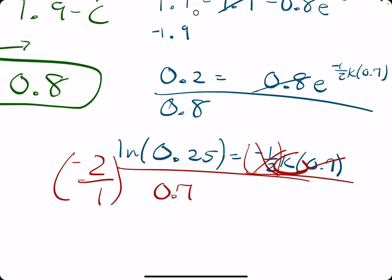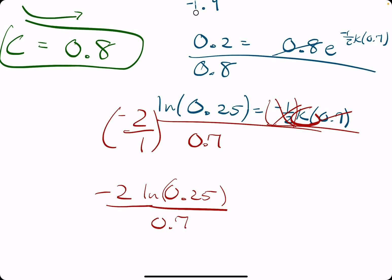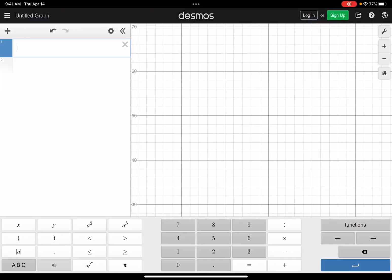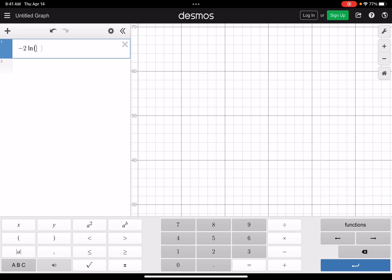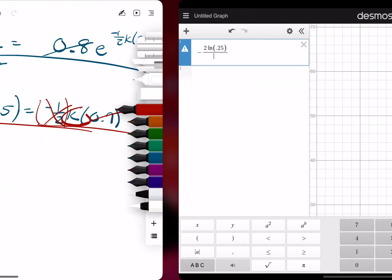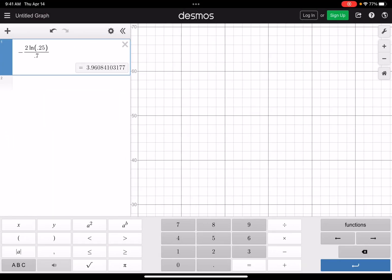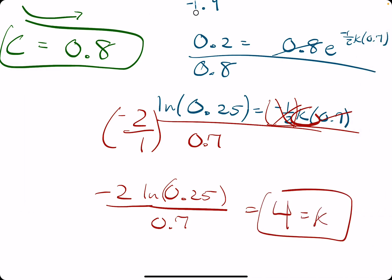So, we will get k by itself if we do negative two times ln of 0.25 divided by 0.7. Negative two times natural log of 0.25 divided by 0.7. So, we get 3.96, which should round to 4 for our k value.